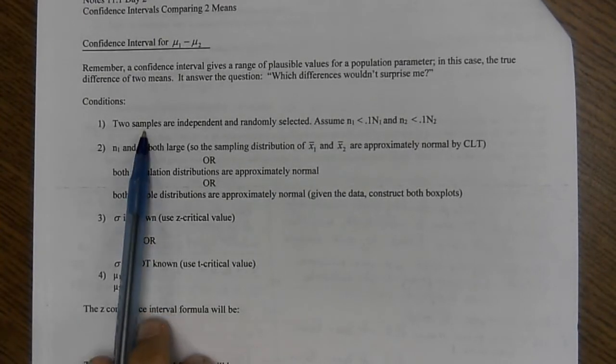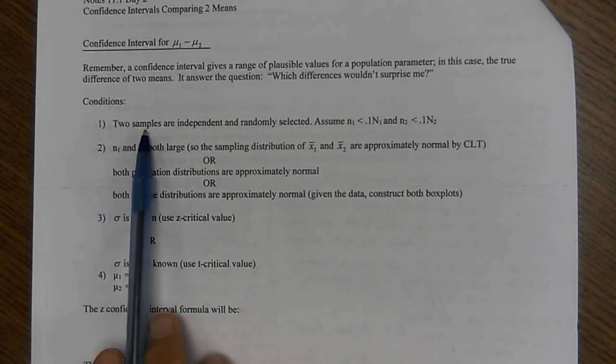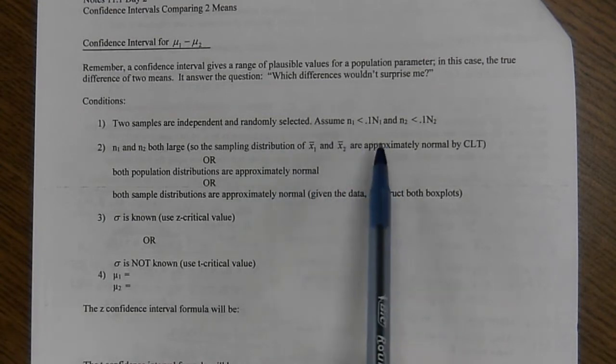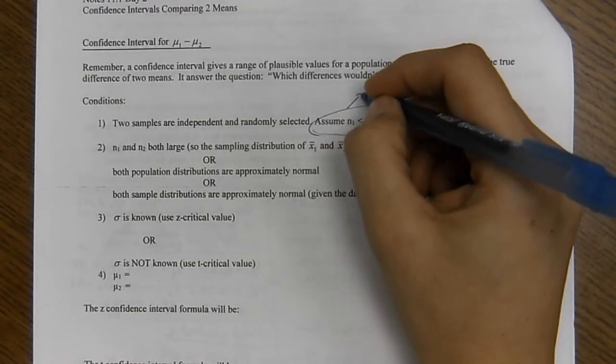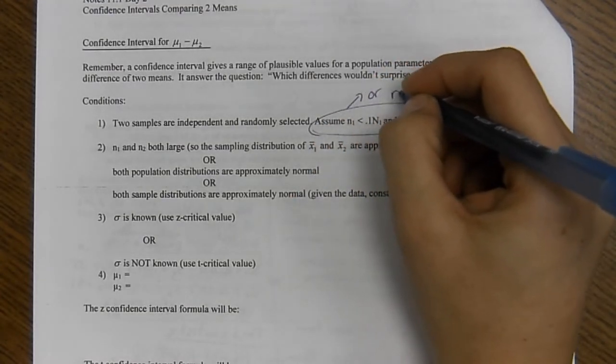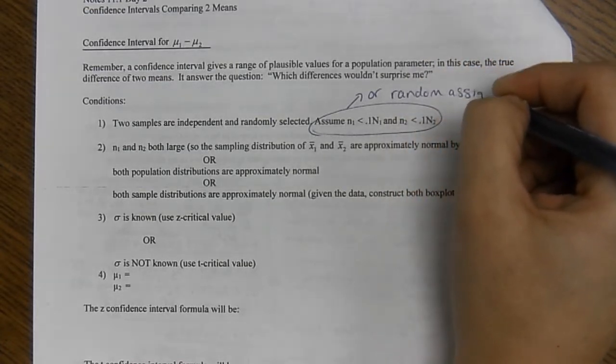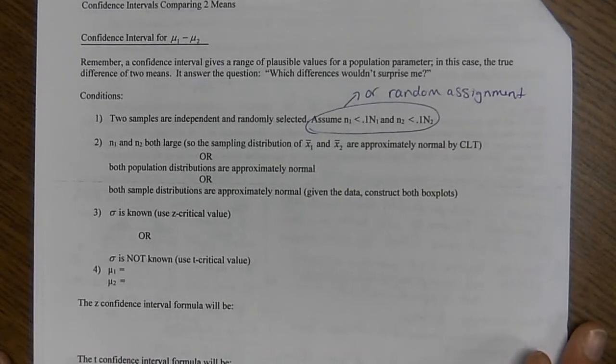So the conditions are basically the same. Condition one, the sample should be independent and randomly selected. We can assume the sample sizes are less than 10% population size. If we don't do the 10% rule, if we have random assignment. So if we have random assignment, then there's no 10% rule.